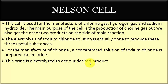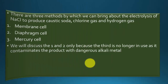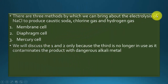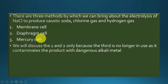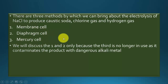Let's see how this Nelson cell actually works. There are three methods by which we can bring about the electrolysis of sodium chloride to produce caustic soda, sodium hydroxide, chlorine gas, and hydrogen gas. One is the membrane cell, another is the diaphragm cell, and the third is the mercury cell. We will discuss only the first two, as the mercury cell is obsolete and no longer in practice because mercury ions getting into the environment are hazardous — mercury being a heavy metal.